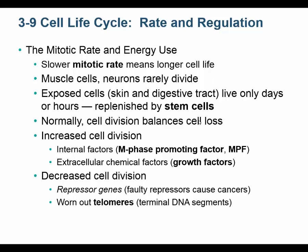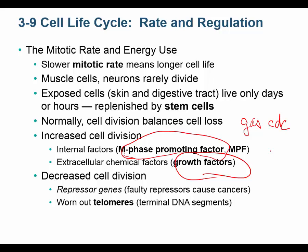We have signals that tell our cells to divide. Sometimes these are called growth factors, and sometimes they're called mitosis-promoting factor or M-phase-promoting factor — M-phase is mitosis. We call those the gas of the cell division cycle. But we also have signals that tell our cells don't divide, and we call those the brakes of the cell division cycle. The ones that say don't divide are called repressor genes, so the repressor genes are the brakes.